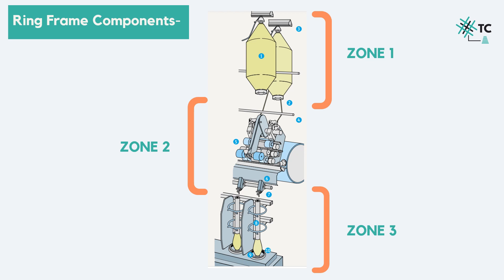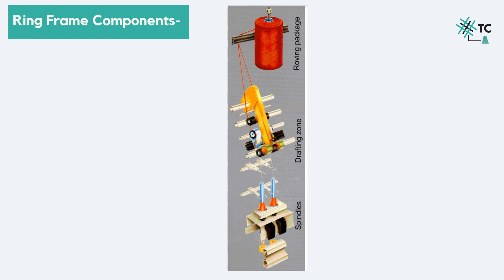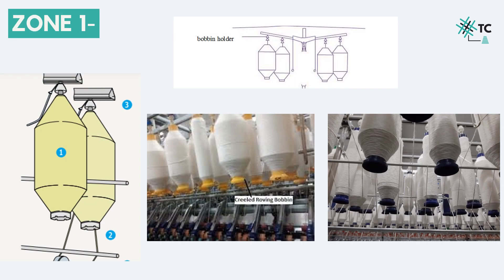This image will give you an even better idea of how the zones look like: the roving package, the drafting zone, and the spindles. Zone one — before discussing zone one, you should know about what a roving is. It is a long narrow bundle of fiber, which is an output material of the speed frame. This is a roving bobbin, where the roving is wound around a bobbin. So in zone one, the roving is fed to the ring frame from a roving bobbin, which is held by a bobbin holder mounted on a creel, which you can see in the image at the top. For all the spindles, roving bobbins are creeled on the machine. The roving is guided with the guide bars, which is then passed through the drafting rollers. To sum up zone one: the roving bobbins are inserted on a bobbin holder, which is ultimately held on a creel. These guide bars guide the roving into the drafting system, that is zone two.